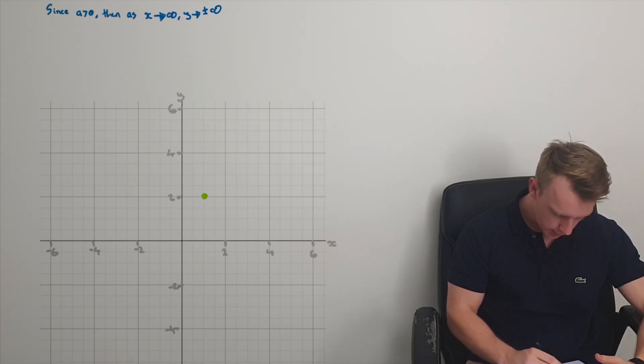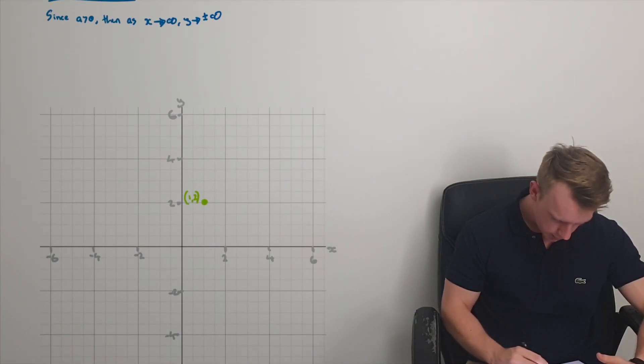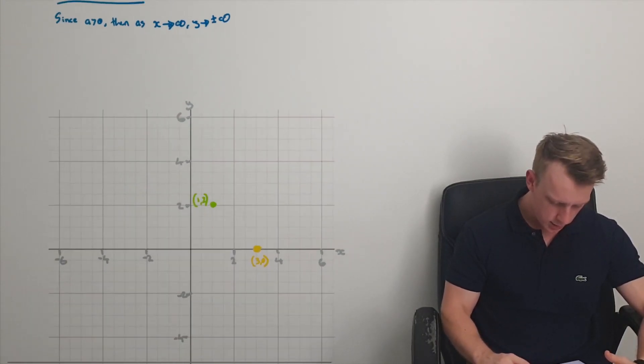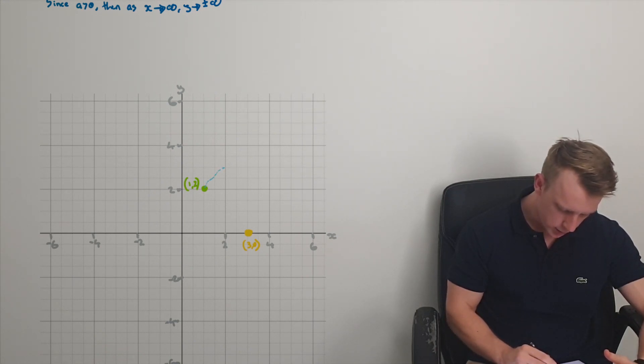So first things first is that vertex point that occurs when x is 1, y is 2, it's a vertex 1, 2, and we have got an x-intercept at x equals 3. So right down here. I might do that in yellow. Right down here. That's (3, 0). And I know the behavior is shooting off as x goes to infinity, y goes to plus minus infinity. So it does that behavior.